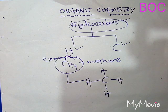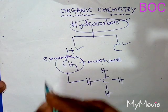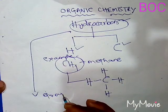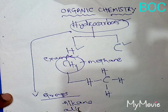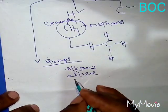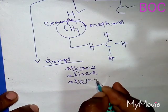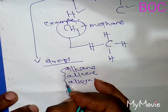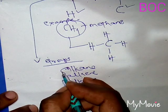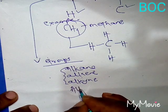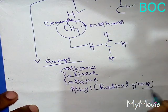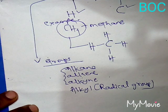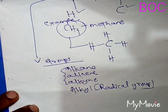We will discuss some groups. Some hydrocarbon groups are alkane, alkene, and alkyne. These are the three basic groups, and along with that, another group — the alkyl group — is present, which is also called the radical group.